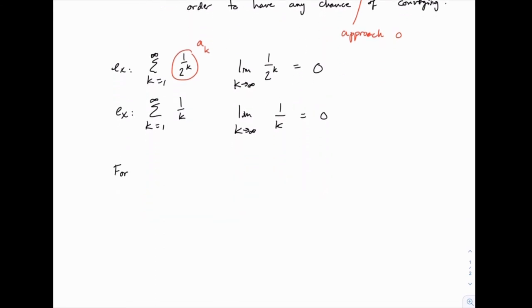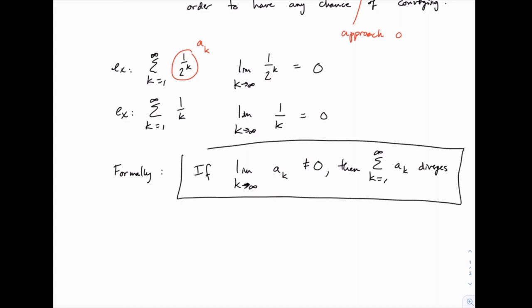So formally, if we write down what the divergence test looks like, if the limit as k goes to infinity of that formula for the terms of the series, if this limit is not 0, then we know for sure that this series diverges. And that's all that the test claims. This test makes no claim about what happens if the limit is 0. In that case, we don't know whether it converges or diverges. But if the limit comes out to not being 0, then we know for sure that it diverges.